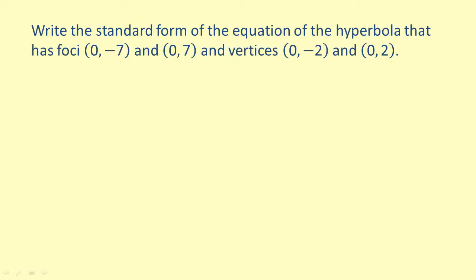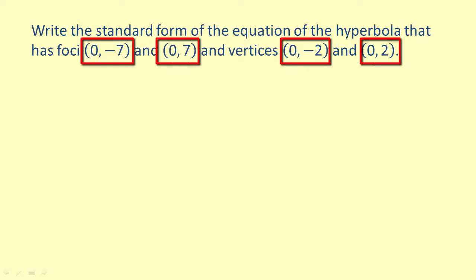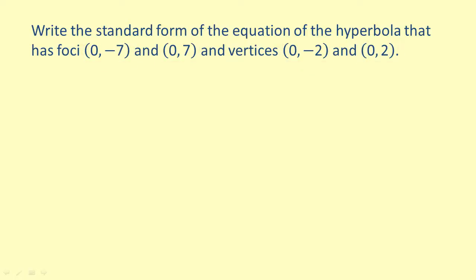In this problem, we are going to write the equation for a hyperbola in standard form. Notice that the points we are given are all y-intercepts. This means the transverse axis of this hyperbola is the y-axis. So we'll be using the form y squared over a squared minus x squared over b squared equals 1.